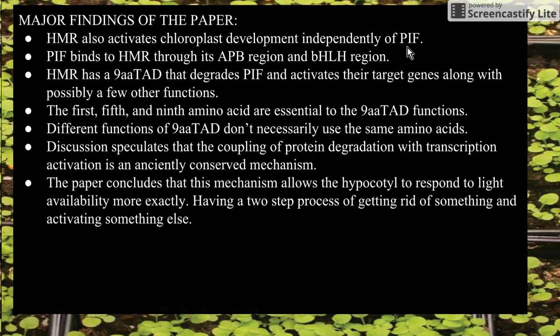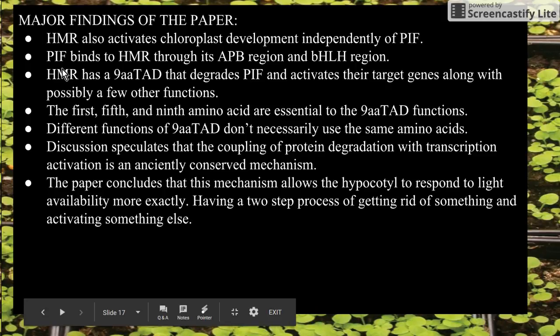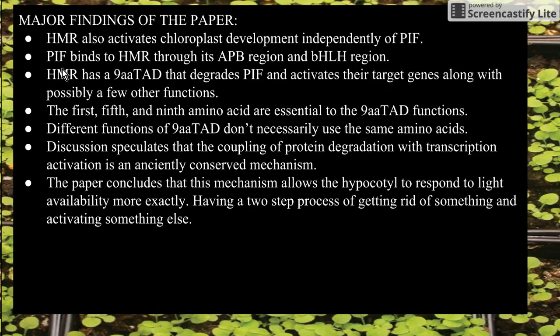They identify the region of hemera responsible for degrading the interacting factor and transcribing target genes — it's the same region, called the 9aa TAD. Specifically, the first, fifth, and ninth amino acids are essential for both functions, but they aren't necessarily the exact same amino acids that carry out each function — degrading the interacting factor versus transcribing target genes. Those are the concrete findings of the paper.